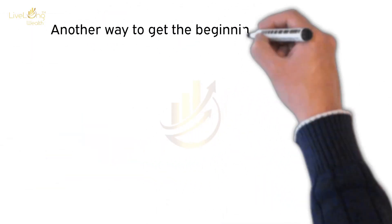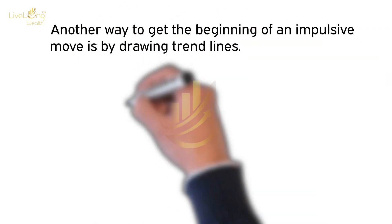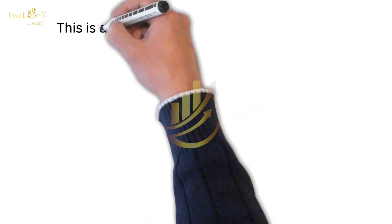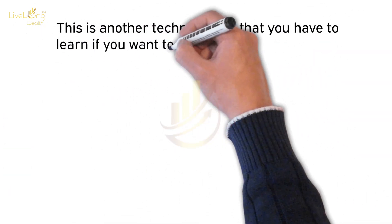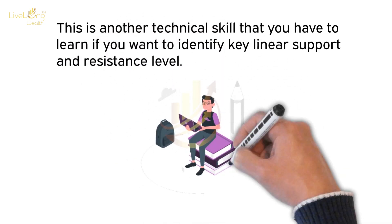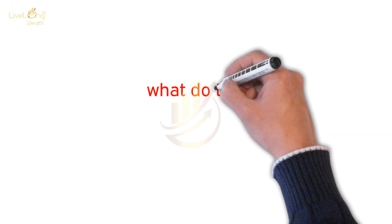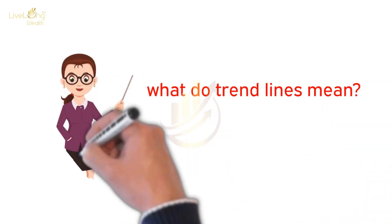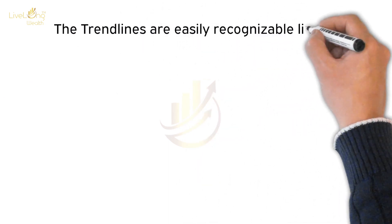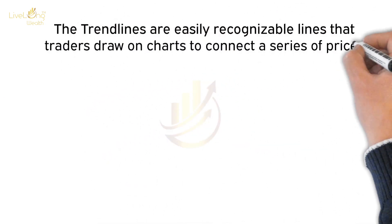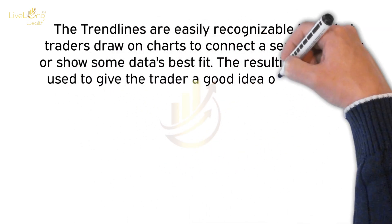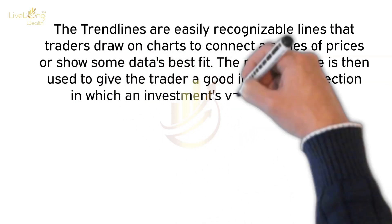Another way to identify the beginning of an impulsive move is by drawing trend lines. This is another technical skill that you have to learn if you want to identify key linear support and resistance levels. Trend lines are easily recognizable lines that traders draw on charts to connect a series of prices or show the data's best fit. The resulting line is then used to give the trader a good idea of the direction in which an investment's value might move.